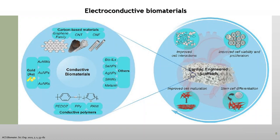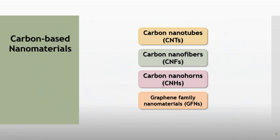Now, let's move on to our subject, which is electroactive biomaterials. The heart is an electroactive tissue capable of electrical signal transmission. Wide ranges of electroconductive biomaterials have been used to preserve the electrical integrity of the heart. These biomaterials are mainly based on carbon-based materials, conductive polymers, metallic particles, and others — all of which could improve cell interaction, cell viability, cell maturation, and cell differentiation.